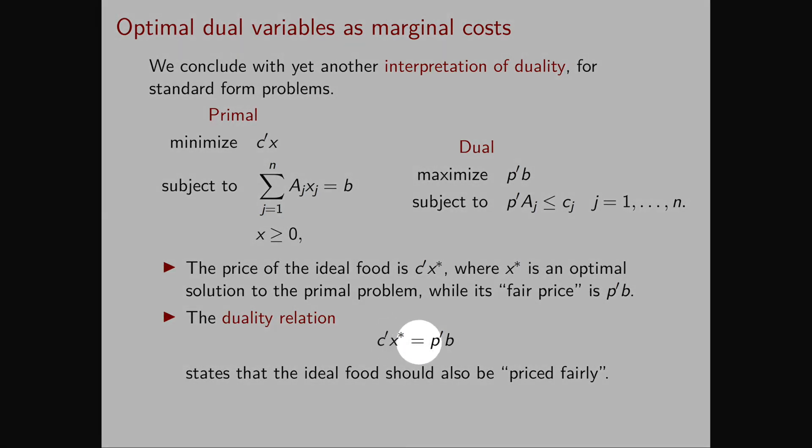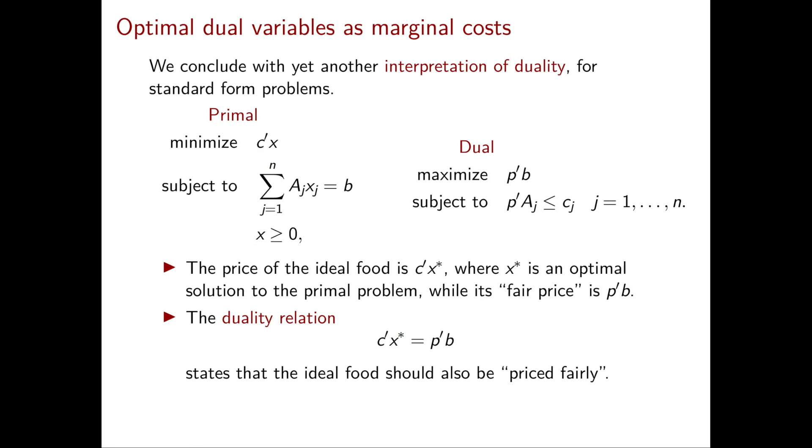In particular, this equality tells us that the cost of the ideal food is equal to its fair price. In other words, the ideal food should be priced fairly. And this concludes our video on the economic interpretation of the dual variables.